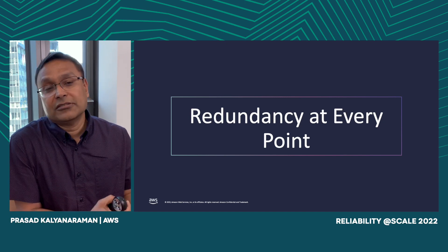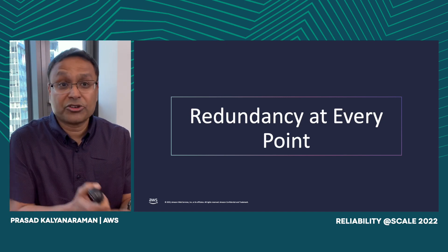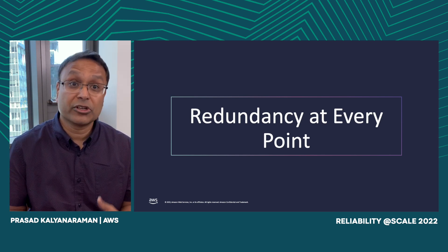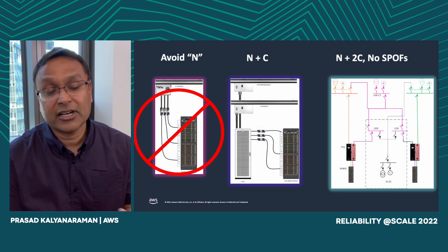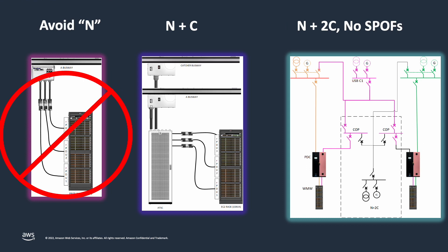In addition to reducing blast radius, the next important thing is going through your single line diagrams to ensure redundancy at every point along the way. We never design our server racks with just N power — N meaning utility backed up by a generator. We don't operate with N power. Our initial designs operated with what we call N plus C, where C stands for catcher — basically another lineup, another utility-plus-generator backup, that's available.